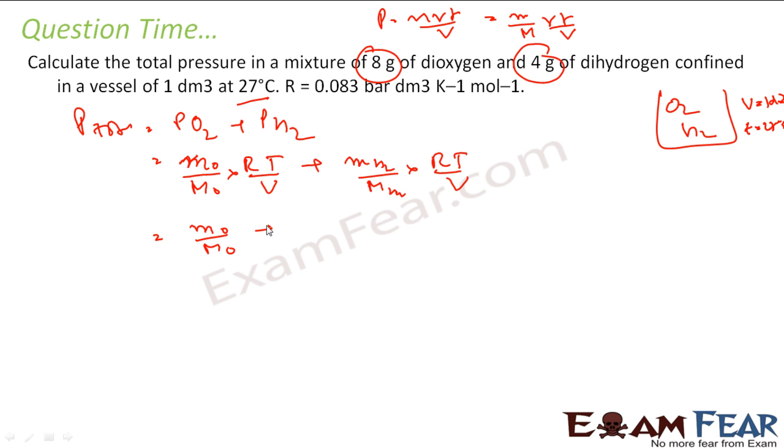You take RT by V common. So this becomes mass of oxygen by molar mass of oxygen plus mass of hydrogen by molar mass of hydrogen into RT by V. So mass of oxygen here is 8 grams. Molar mass of oxygen we know is 32. Mass of di-hydrogen is 4. Molar mass is 2 into RT by V.